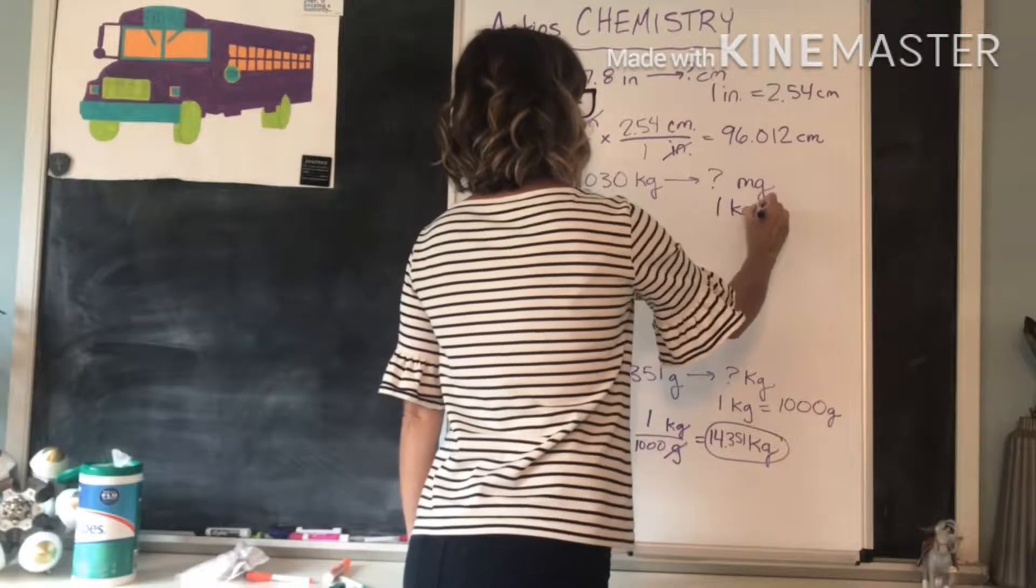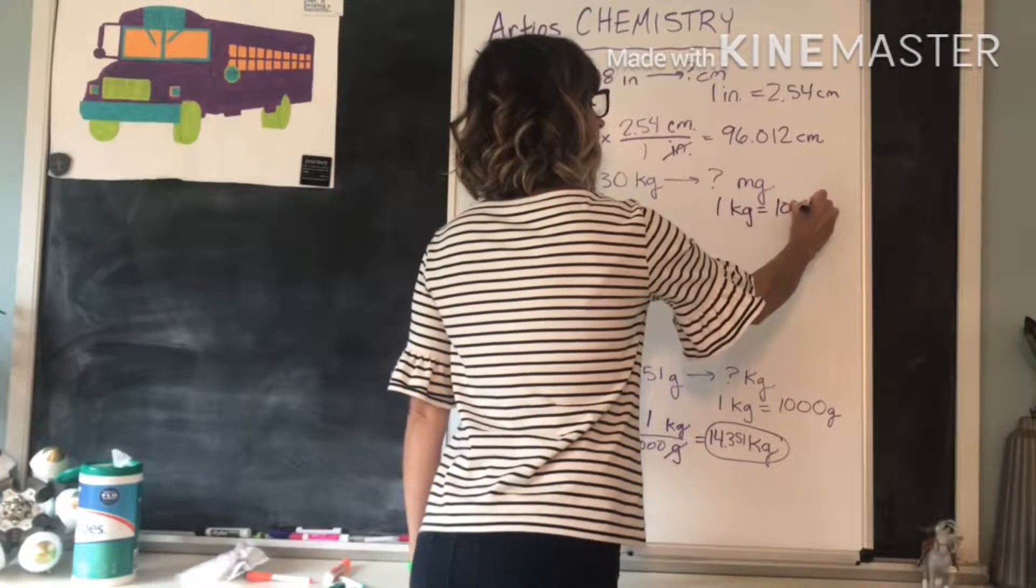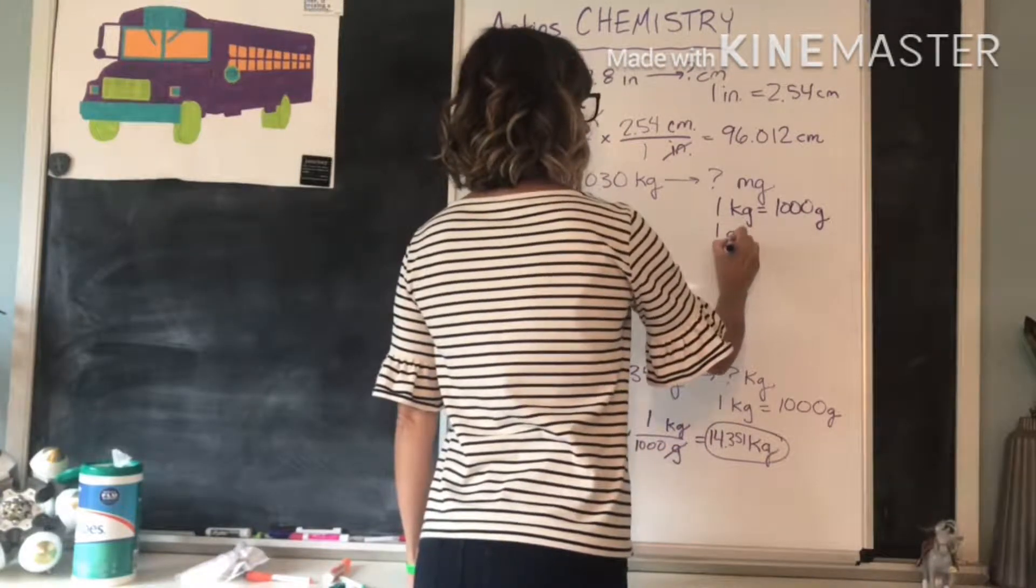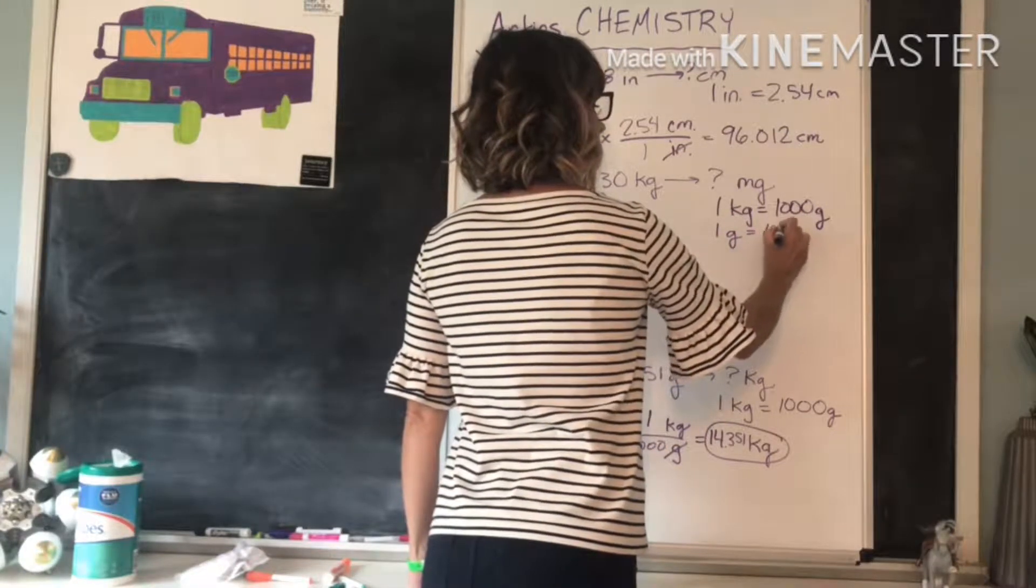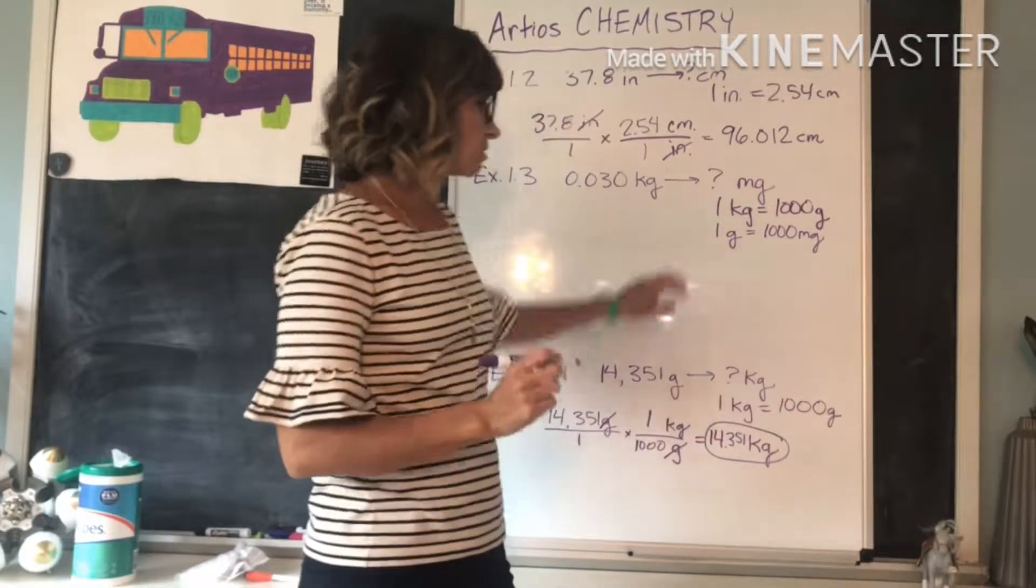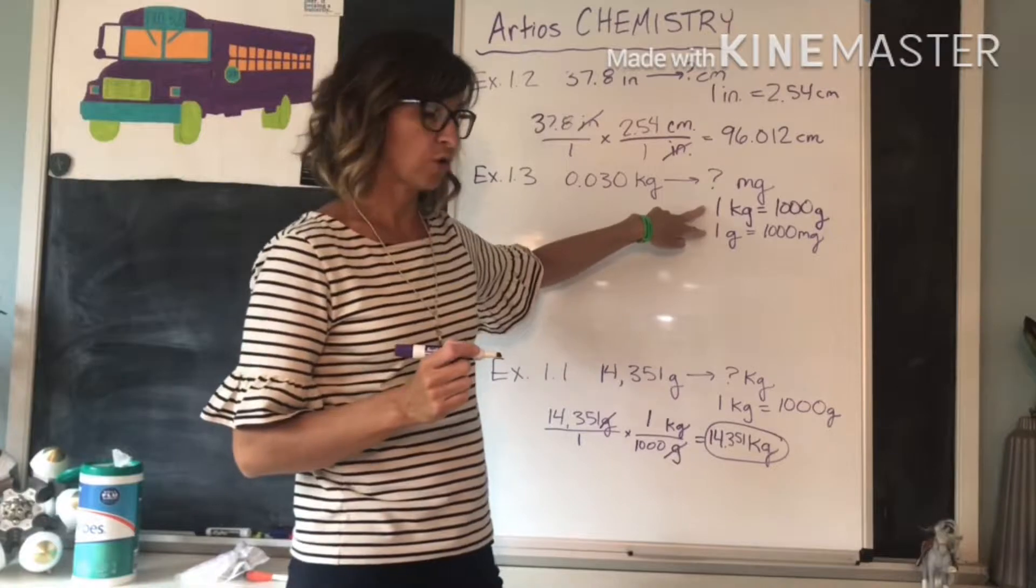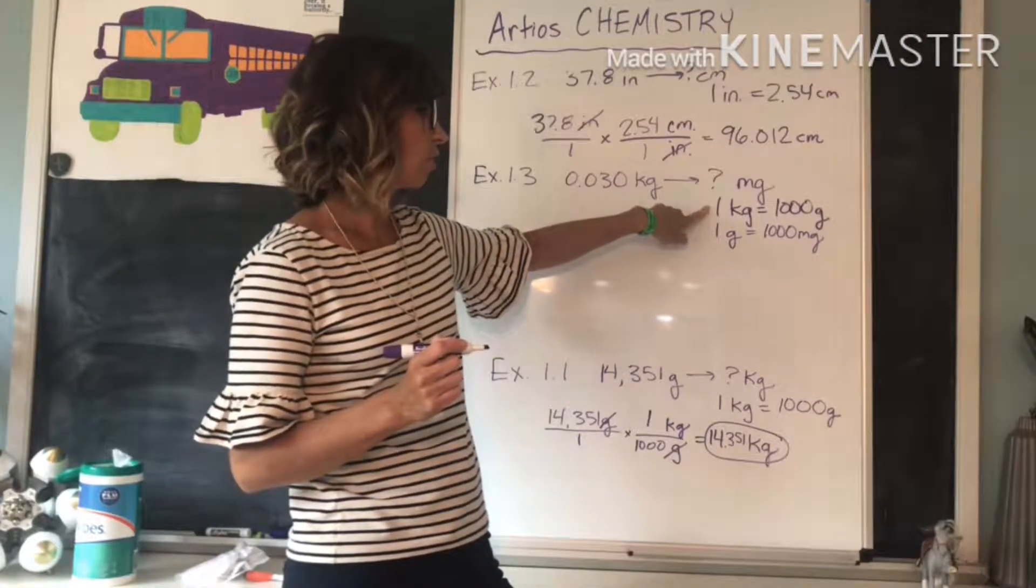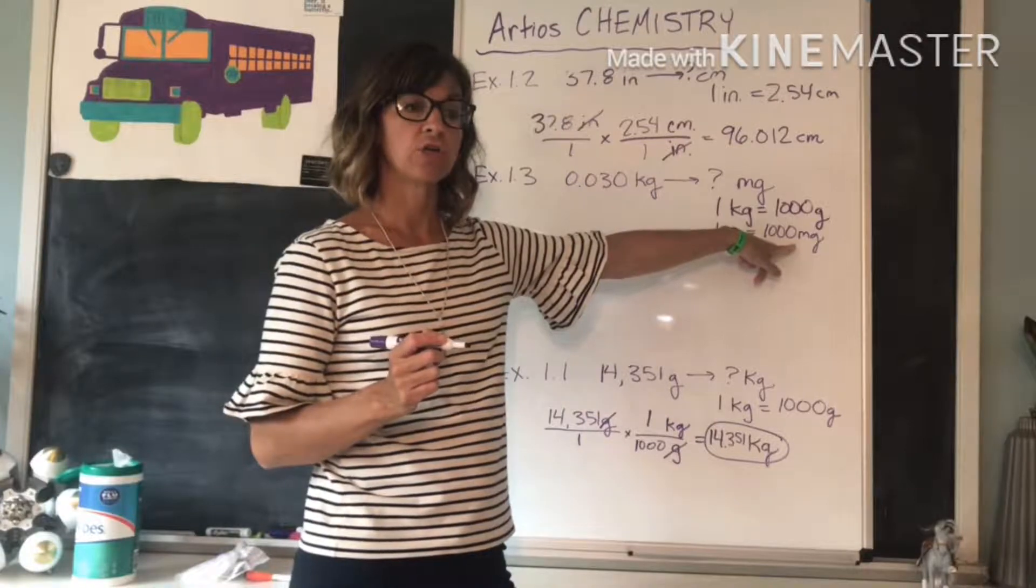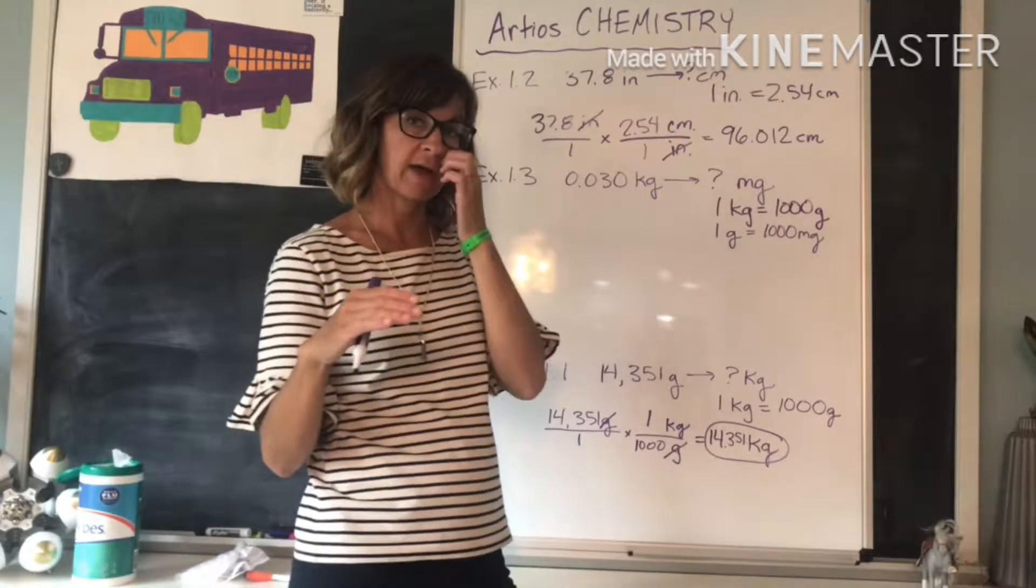One kilogram equals 1,000 grams, and we know that one gram equals 1,000 milligrams. So because we're going to have to use two ratios to get from where we're starting to where we want to end up, it means we're going to have to do two steps of the factor label method.